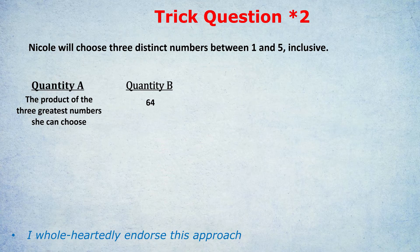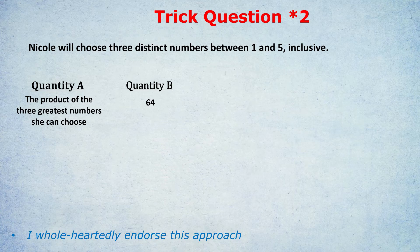Five times 5 times 5, which would be 125, that's 5 cubed. So given that they have to be distinct, they can't all quite be 5, then it's going to be a shade under 125. But either way, that's much bigger than Quantity B, which is 64, so Quantity A would be bigger.